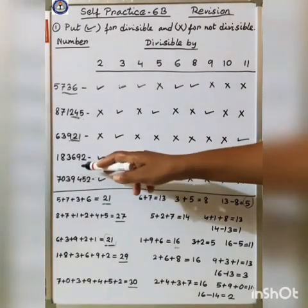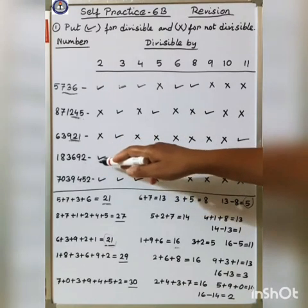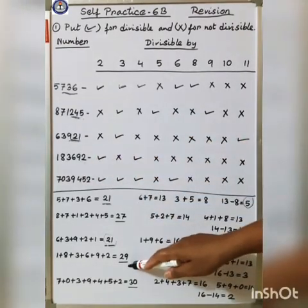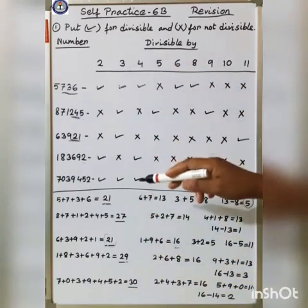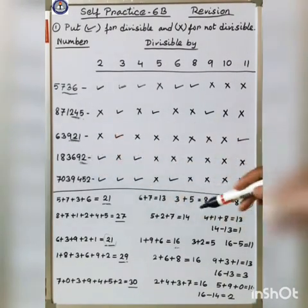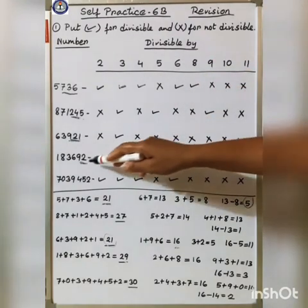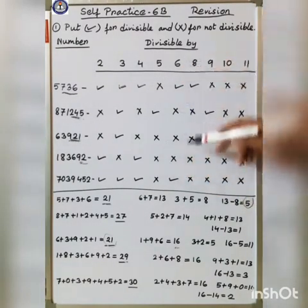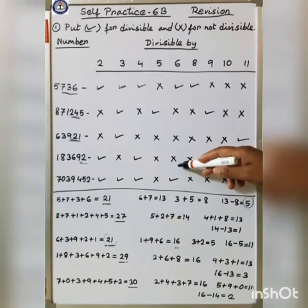Next question: 183,692. For 2: the last digit is 2, which is divisible by 2, so tick. For 3: the total is 29, and 29 is not divisible by 3, so cross. For 4: the last 2 digits are 92, and 92 is divisible by 4, so tick. For 5: the last digit is 2, not 0 or 5, so cross. For 6: the number is divisible by 2 but not 3, so cross.